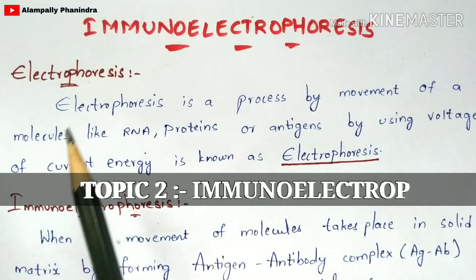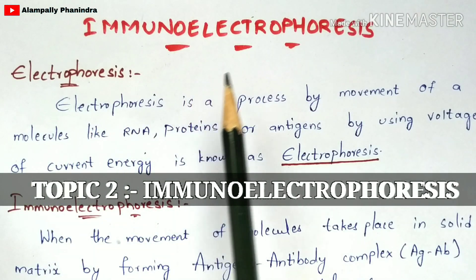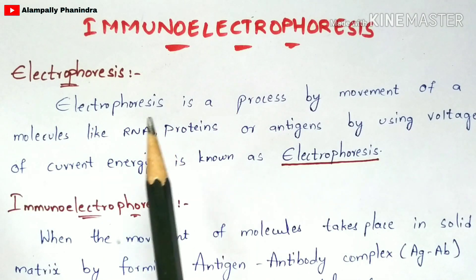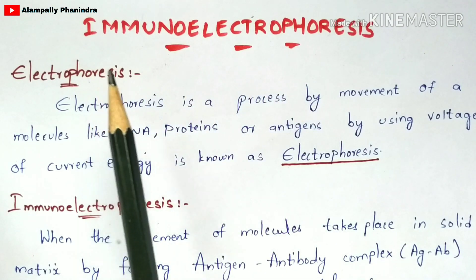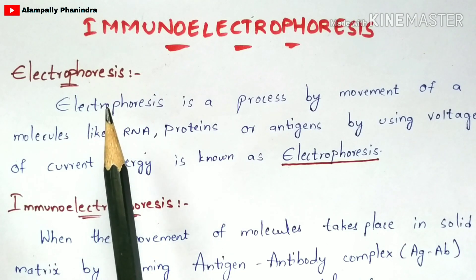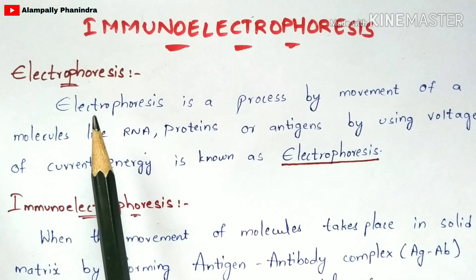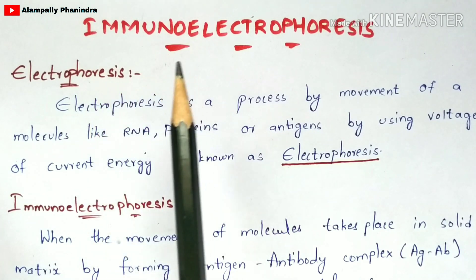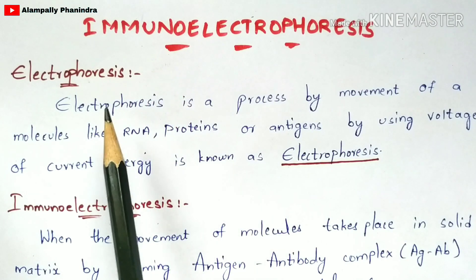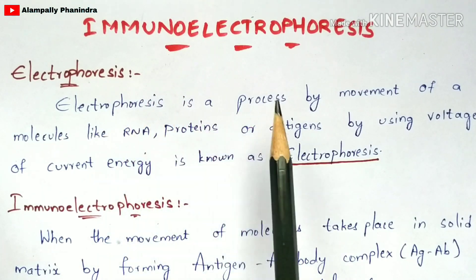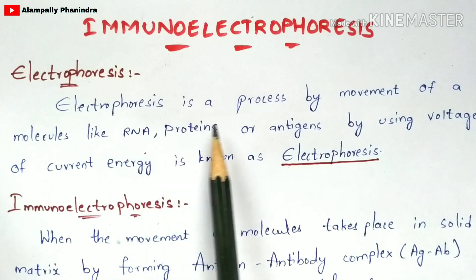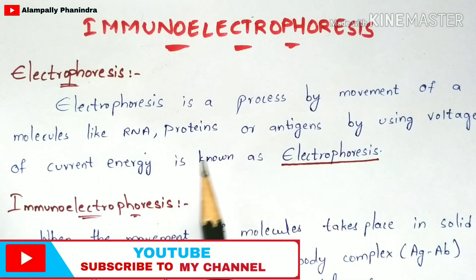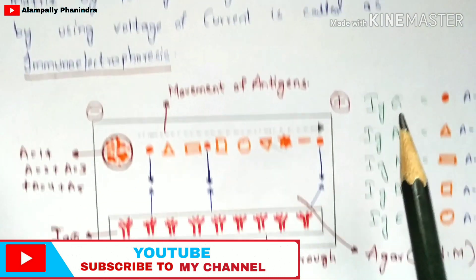Now coming to the second topic called immunoelectrophoresis. To understand immunoelectrophoresis, you first need to know about the electrophoresis method. So let us discuss the concept of electrophoresis so that we can properly understand immunoelectrophoresis. Electrophoresis is a process by which molecules like RNA, proteins, or antigens are moved by using a voltage or current.